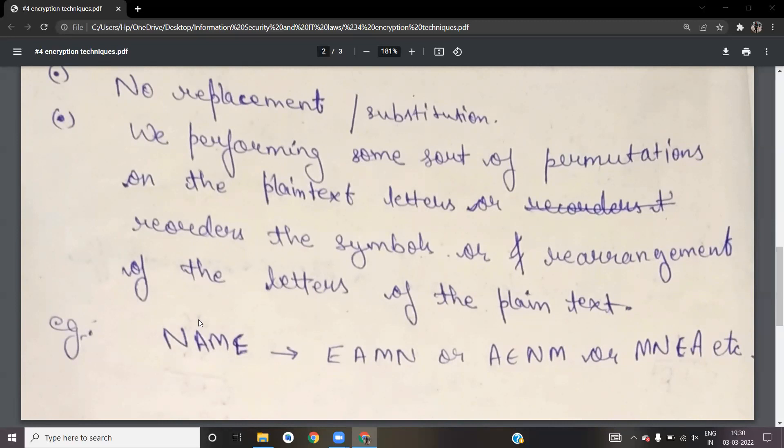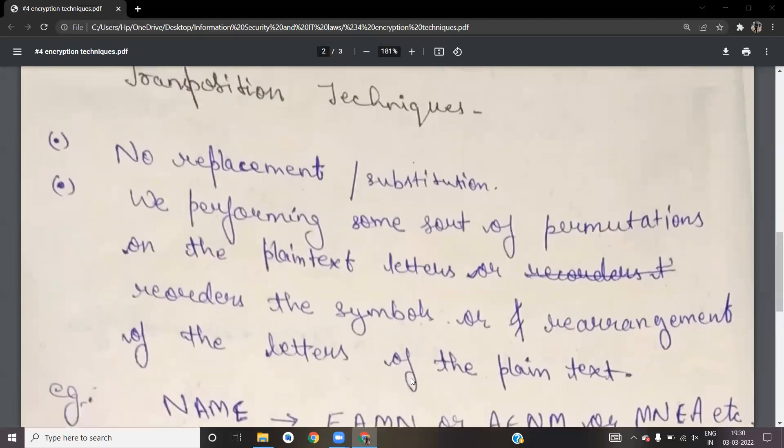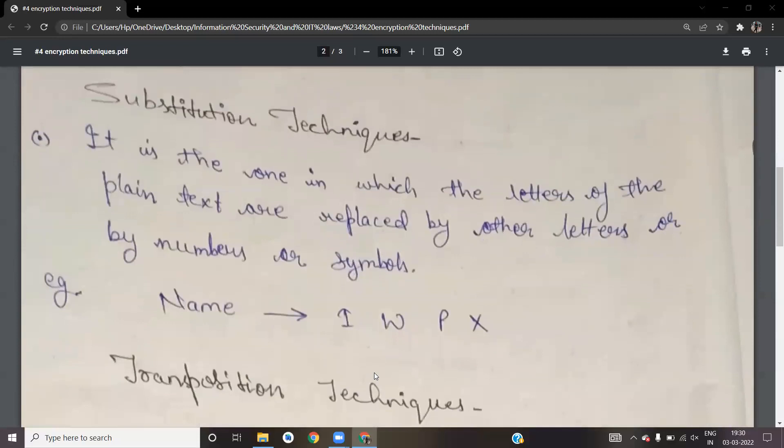The name can be rearranged 24 times. 4 times 3 equals 12, 12 times 2 equals 24. For example, EAMN. You can create 24 forms of the word NAME through permutations. This is transposition. In substitution, you replace one letter with another letter.